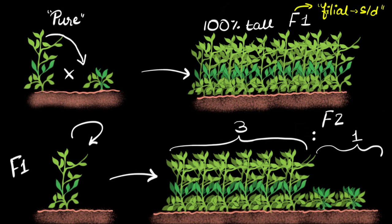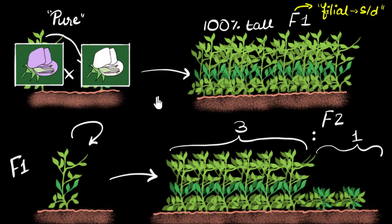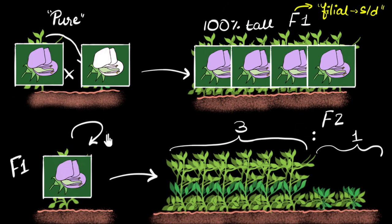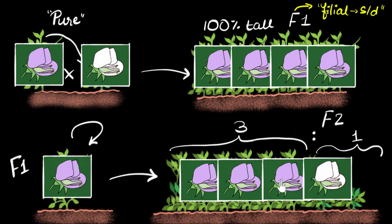It turns out he gets the same result for all the characteristics he experiments with. For example, when he takes the color of the flower into consideration — he takes a pure purple-colored pea plant and crosses it with a pure white pea plant — in the first generation he gets all purple-colored flowers, no white flowers at all. But then when he takes one of these F1 generation purple flowers and self-pollinates, he now gets three times as much purple as white. White comes back in minority — 3:1 ratio.